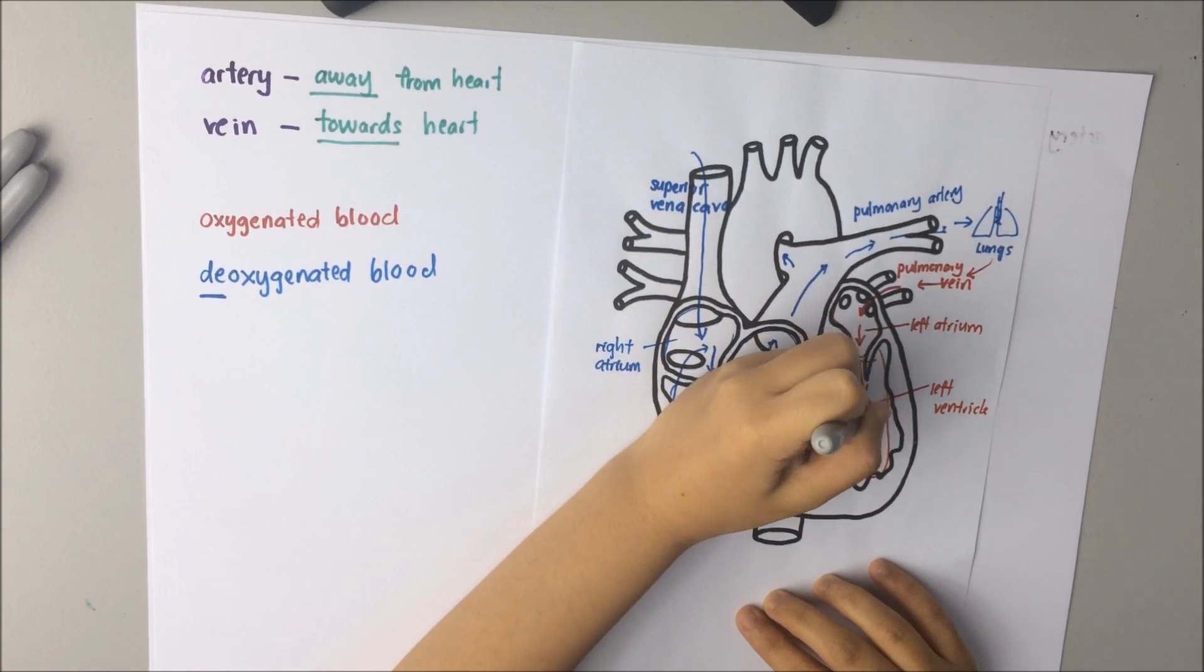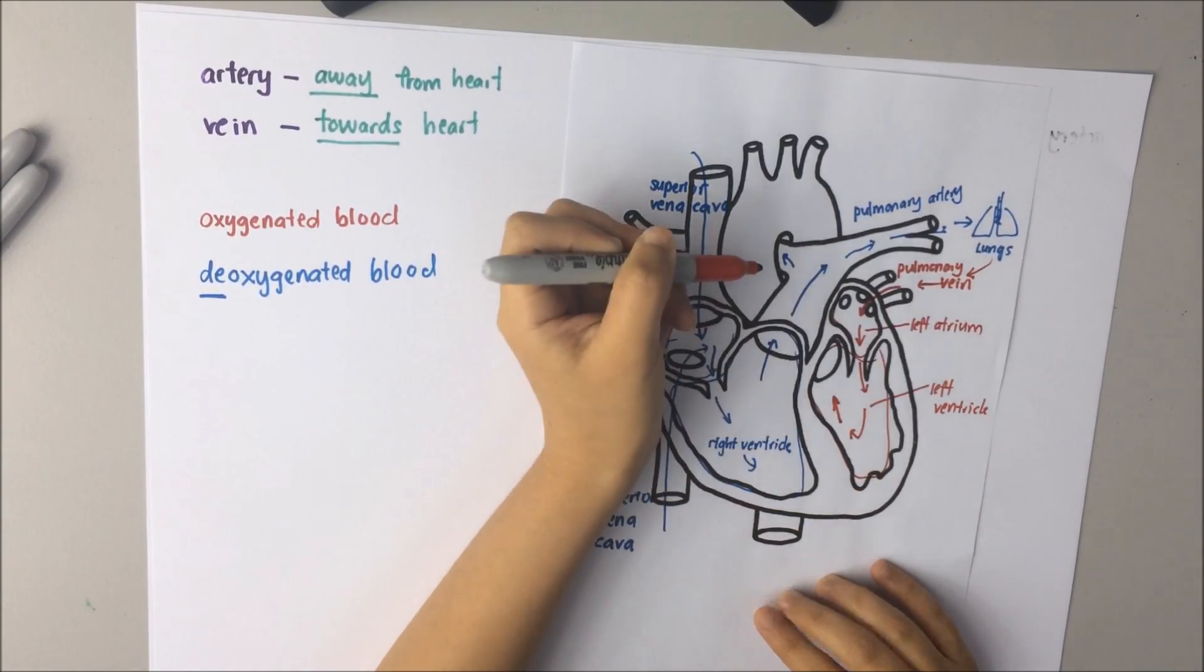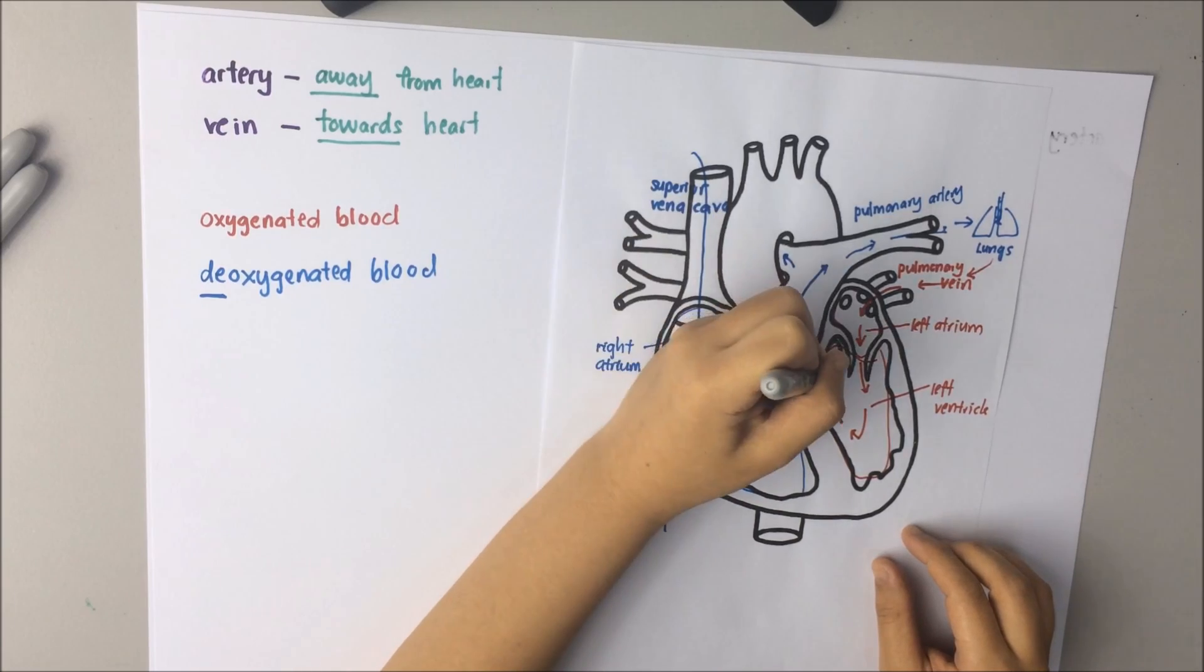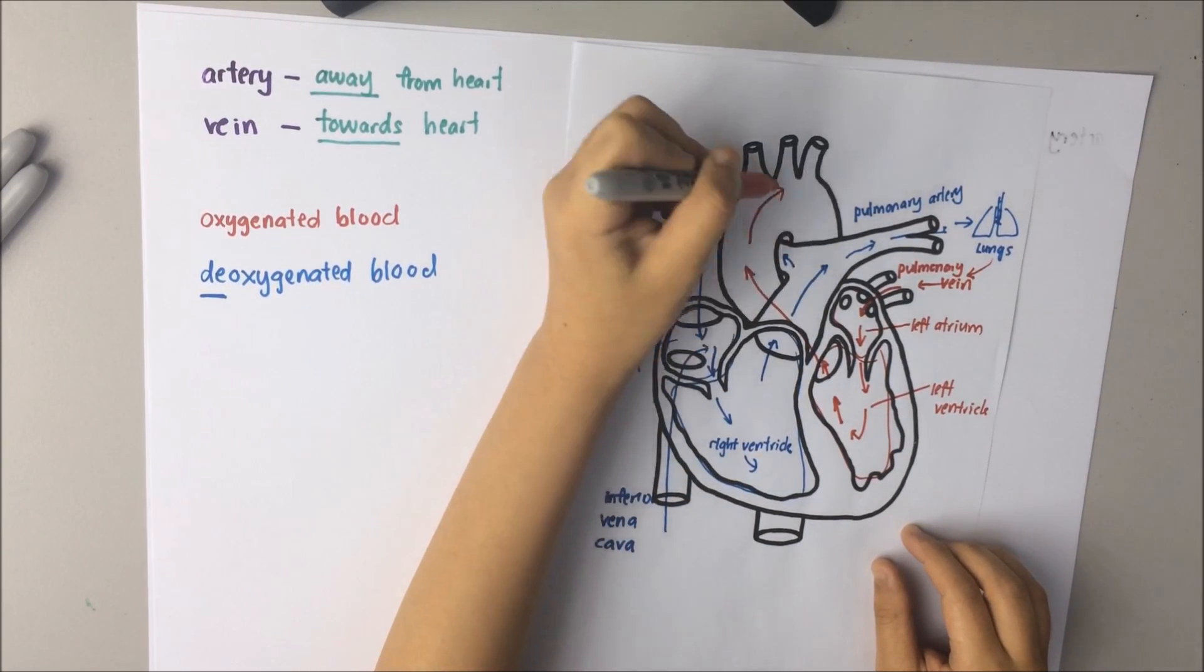And the blood is then pumped into the systemic circulation through aorta.